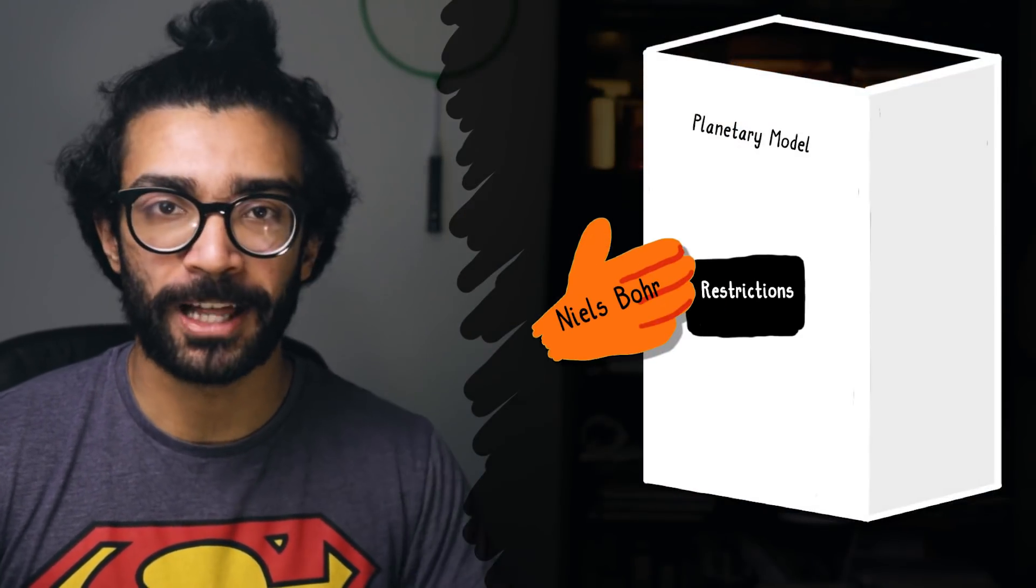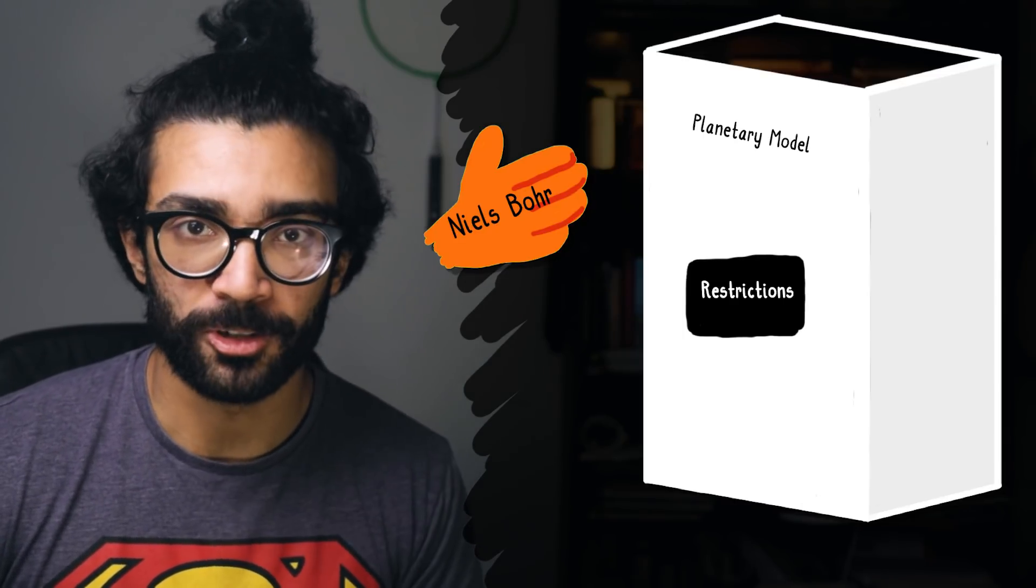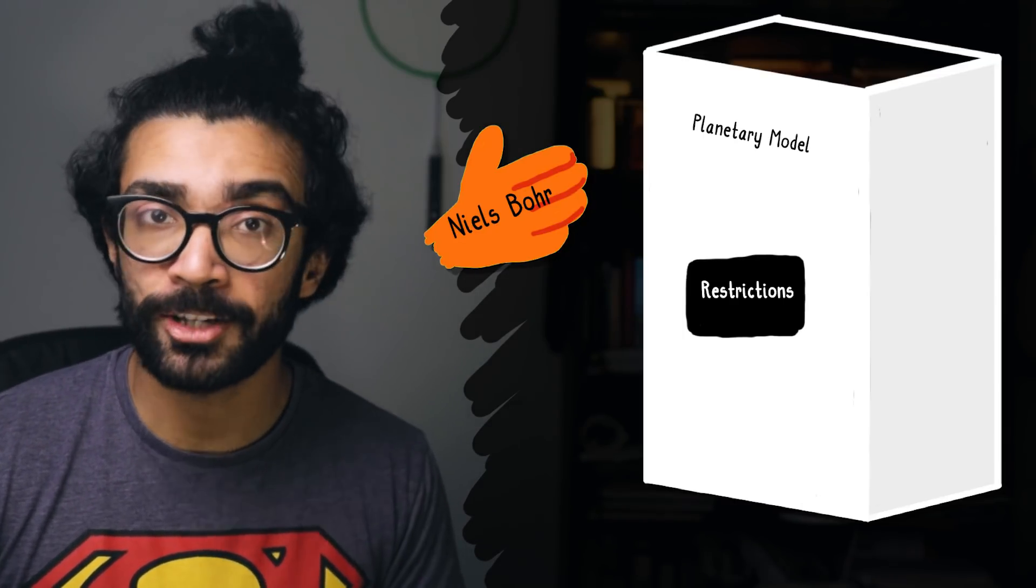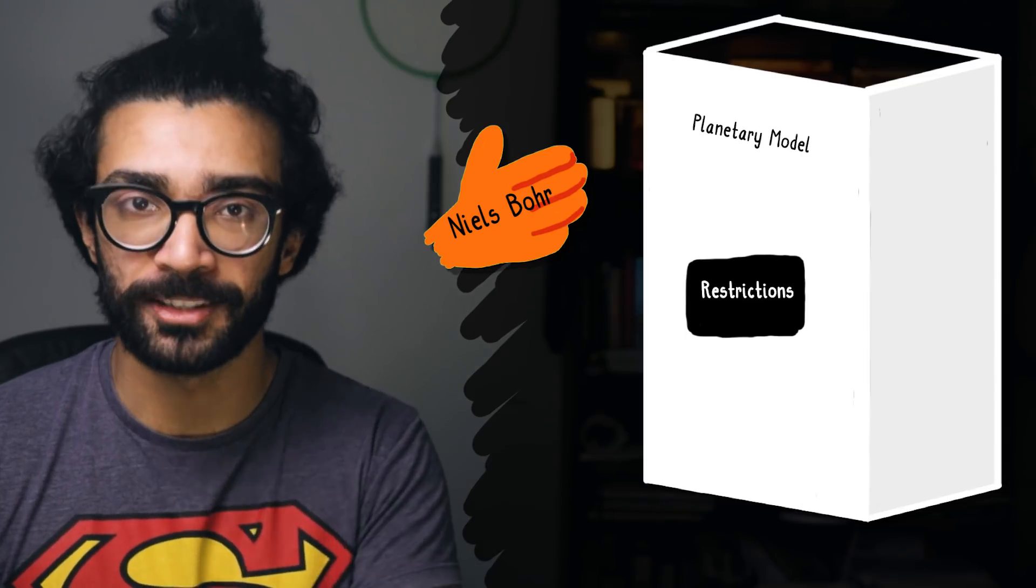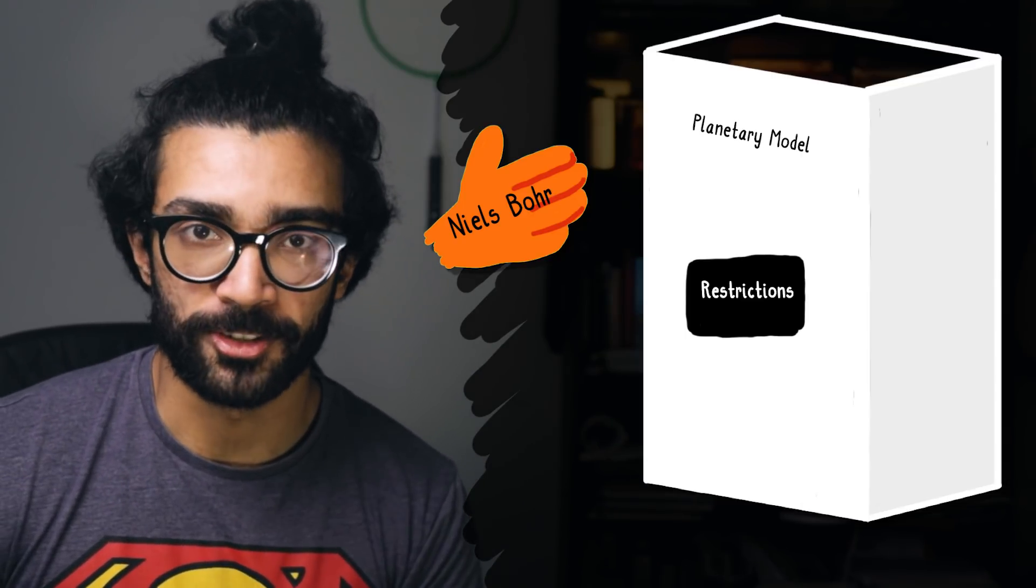Now this is where a physicist named Niels Bohr came into the picture, and essentially used the physics equivalent of flex tape on the broken planetary model. He realised that in order to improve this model, so that it more closely match the actual behaviour of actual atoms in the universe, we would have to place some restrictions on it.